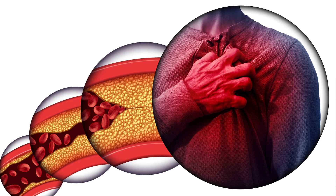Type 1 is called spontaneous myocardial infarction. In layman's terms it means plaque rupture. When there is a block and this block gets disrupted or ruptured, it causes a heart attack. This is Type 1 myocardial infarction.